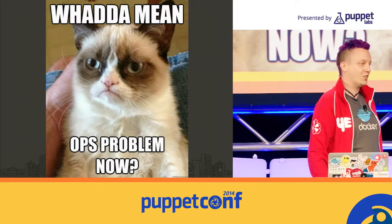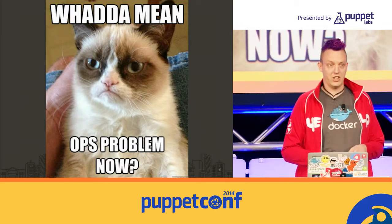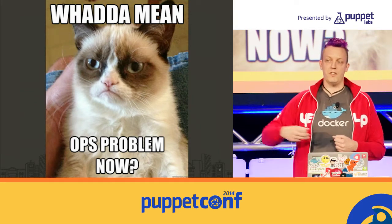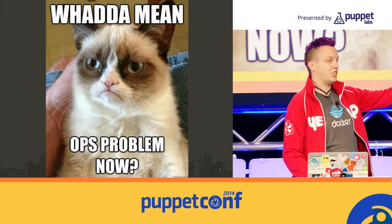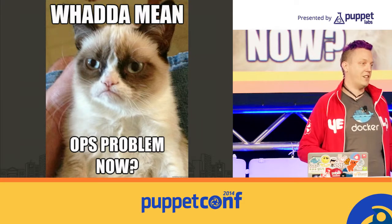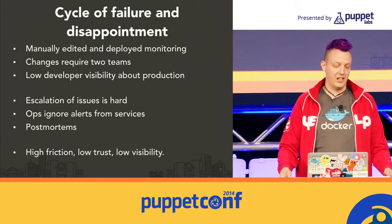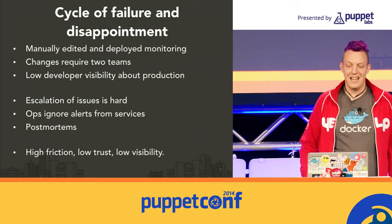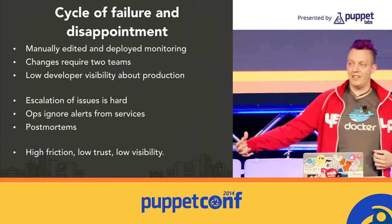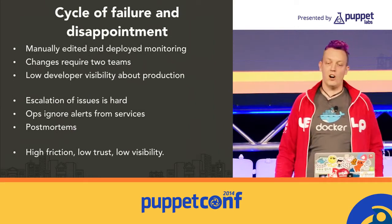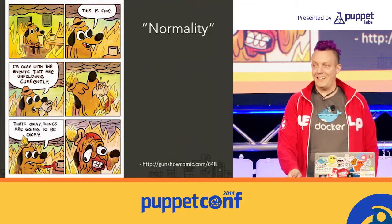If monitoring is only an ops problem, you end up with everything on fire all the time. It's hard to know what's actually broken if everything's on fire. We didn't have any situational awareness — you wouldn't know if alerts are important, you wouldn't know if a box was healthy. You expect broken windows and you don't take responsibility. You get high friction, low trust, low visibility. Your monitoring system is killing you with a thousand cuts. You've got Stockholm Syndrome because you're used to being paged 20 times a day.